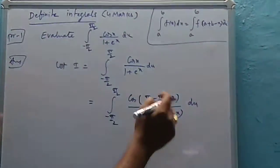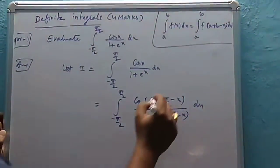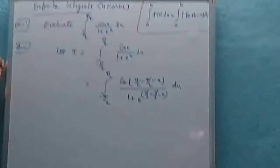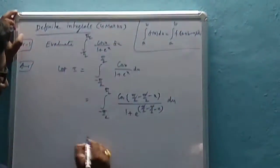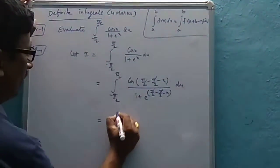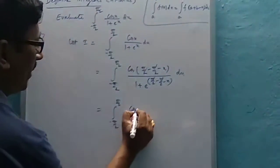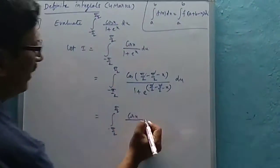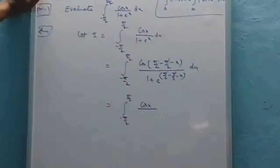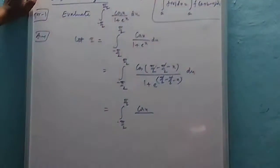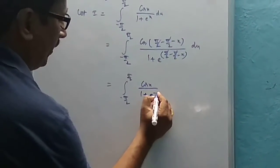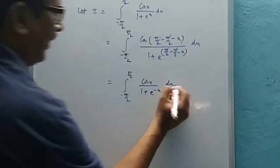After cancellation, the integral becomes the integral from minus π/2 to π/2 of cos(minus x) divided by (1 plus e to the power x) dx. Now, using the identity cos(minus x) equals cos(x), and rewriting the denominator with e to the power minus x. So this becomes: integral from minus π/2 to π/2 of cos(x) divided by (1 plus e to the power minus x) dx.